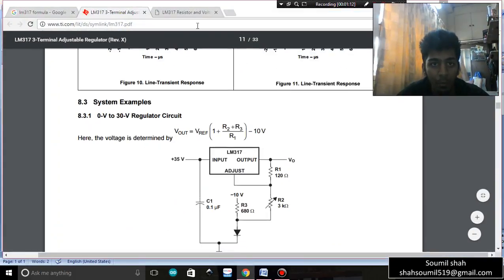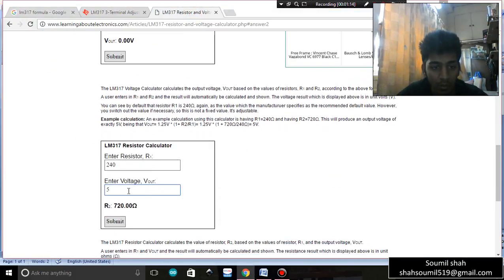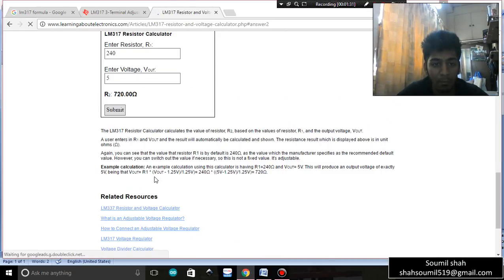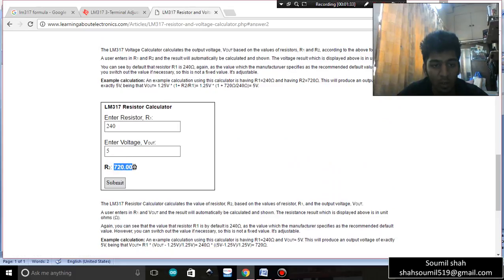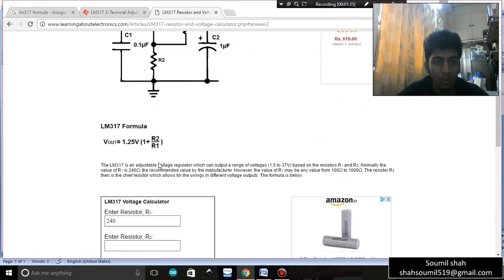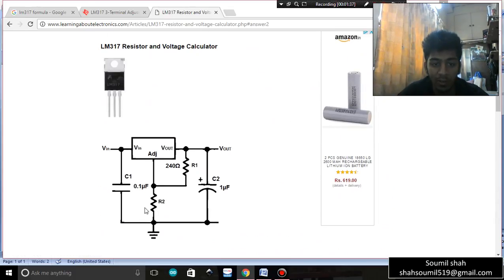This website link would be there in the description below so you can calculate it. Let's say the value of R1 is 240 ohms, I want a voltage of 5 volts for my Arduino board. So I submit and I see 720 ohms is the value of R2. So that means if my R2 value is 720 ohms, I get a value of V out as 5 volts constant, irrespective of what the input voltage is.